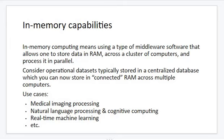In-memory capabilities is a broad term covering in-memory operations, computing power, and processing power. This is middleware software which is used to store data in RAM across cluster computers. Parallel in-memory capabilities allow you to store data in connected RAM across multiple computers.